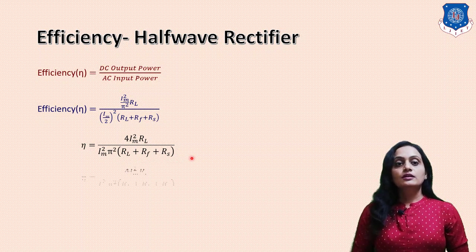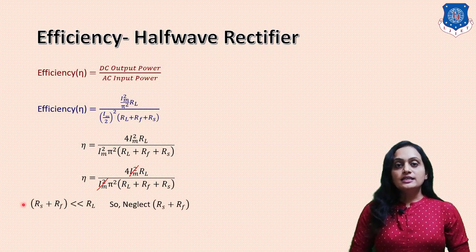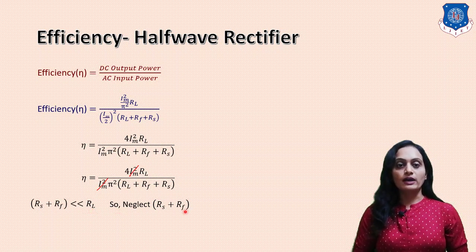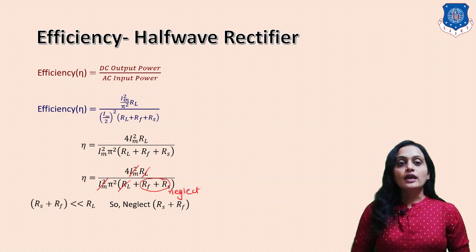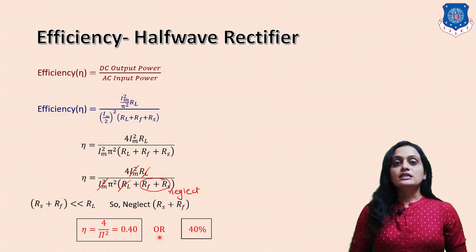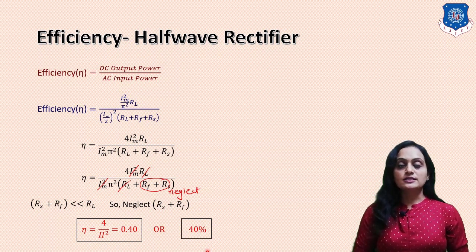IM² cancels from numerator and denominator. RS + RF, that is the secondary resistance plus the forward resistance of the PN junction diode, is very small compared to the load resistance, so we neglect it. RL also cancels from numerator and denominator, and finally efficiency = 4/π² = 0.40. Representing in percentage, the efficiency of the half wave rectifier is 40%, which is very low.